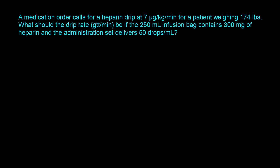Let's start by analyzing the question. Our goal is to determine the flow rate in drops per minute. We've been given a mass rate of 7 micrograms per kg per minute, the patient's weight of 174 pounds, the volume of the bag being infused, the amount of heparin in the 250-milliliter bag, and the drop factor or calibration factor. For this question we will need all those values, and we want to set this up starting with the mass rate.